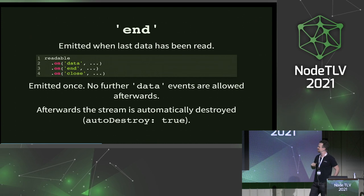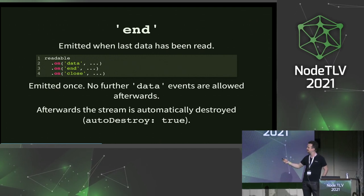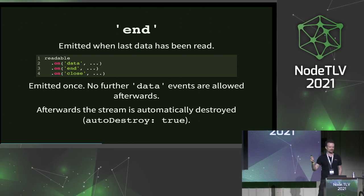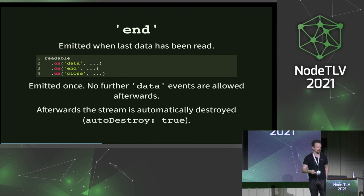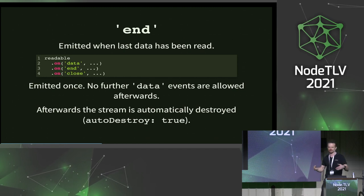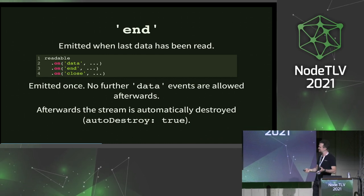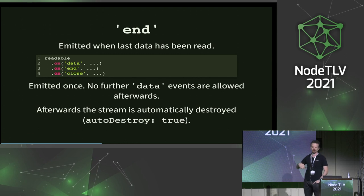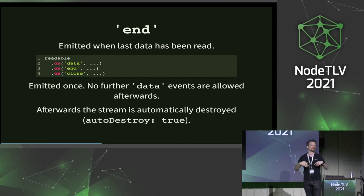Another thing we've changed recently is streams have a feature called auto destroy. When end for readables or finish for writables is emitted, streams will automatically call destroy. This was false in the past — we've changed the default now so it's true. Hopefully all streams get destroyed eventually. A common bug is users read the stream, get to end, but never destroy it — they don't clean it up. With the change in defaults, it will actually get destroyed automatically. So if there are no errors, you don't have to worry about it anymore. And if there are errors, errors automatically destroy the stream.